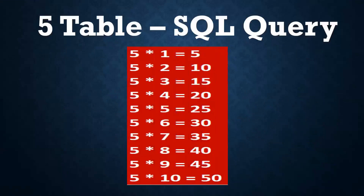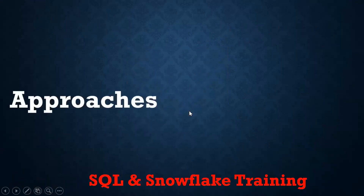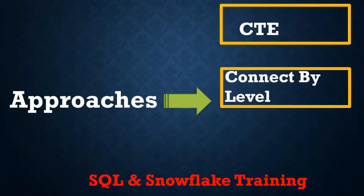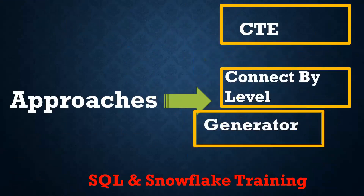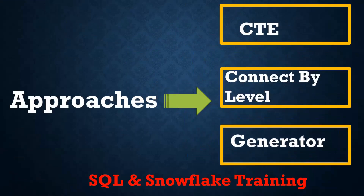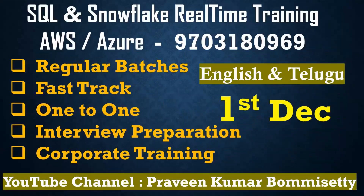So by using SQL query, I want to print this five times table. There are so many ways we can achieve this. We can use CTE (common table expression), connect-by-level, or generator — three different ways to achieve the same thing.